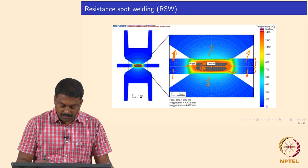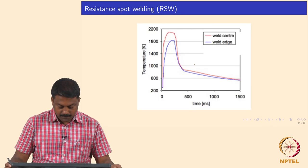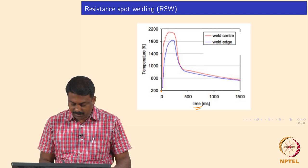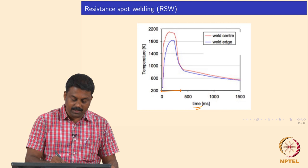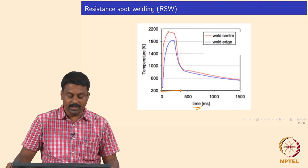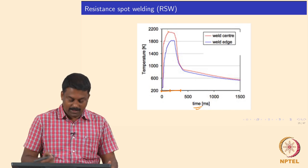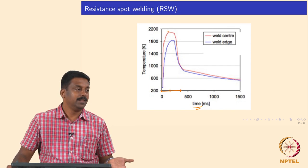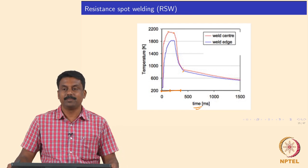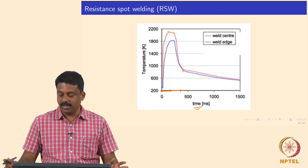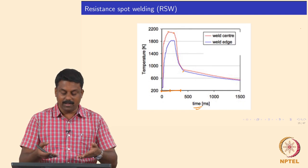Looking at the thermal cycle, for example at the centre and at the edge, the time is hardly 400 milliseconds. Material is heated up to a temperature at the centre as high as 1800°C — 2000 Kelvin. Imagine material heated from room temperature to 2000 Kelvin in 100 milliseconds — extremely fast heating as well as cooling rate. Within no time, material is cooled from melting point to room temperature. Heating rate and cooling rate can be as high as 1000 to 2000 Kelvin per second — in this case even 4000 Kelvin per second. This is the actual predicted thermal cycle shown in the previous graph.